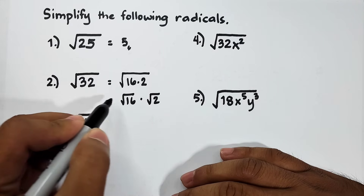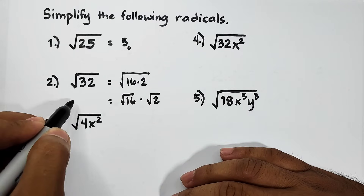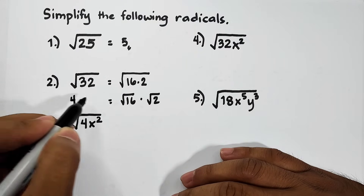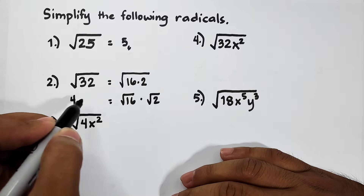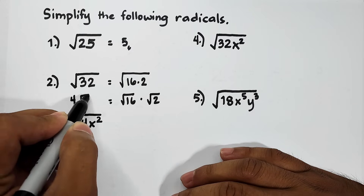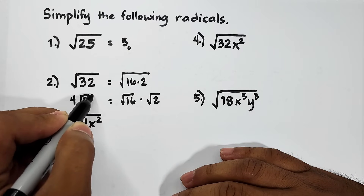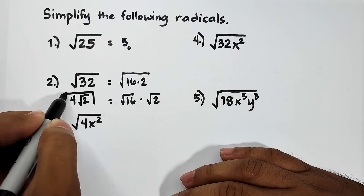When we simplify this, the square root of 16 gives us 4, which we put outside, and then we copy the square root of 2. So the answer is 4√2.